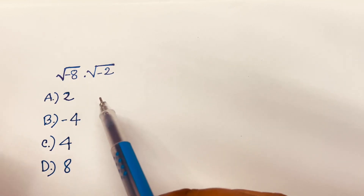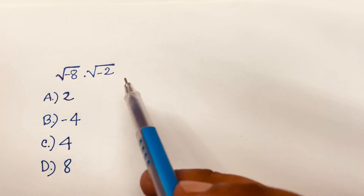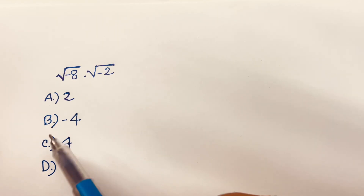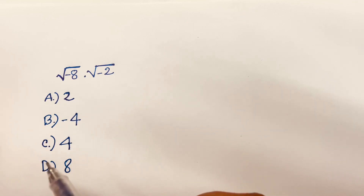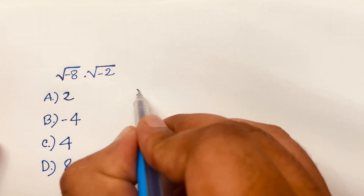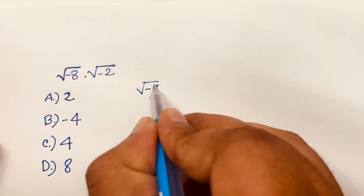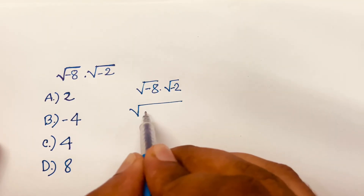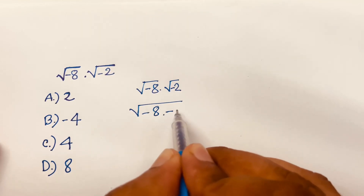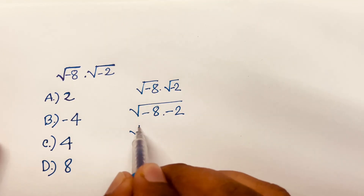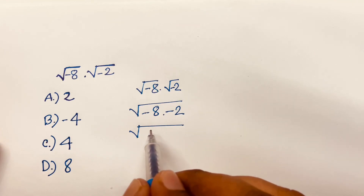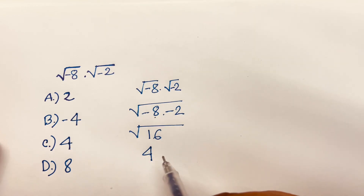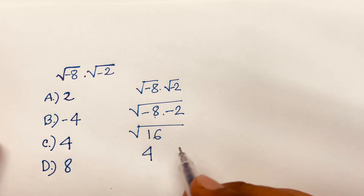How to solve square root of minus 8 times square root of minus 2. Here are 4 options: 2, minus 4, 4, and 8. A common approach is to combine them as square root of (minus 8 times minus 2), saying minus times minus is plus, giving square root of 16 which equals 4. But that is the wrong answer.